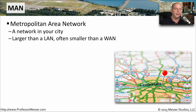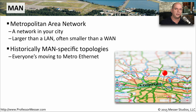A MAN sits somewhere between a LAN and a WAN. This is a metropolitan area network — usually in a central city or smaller geographical area that's relatively local to wherever you are. It is usually a local telecommunications provider giving you this MAN connectivity. These days, they're usually providing simply an Ethernet connection, connecting up all of your local MAN sites. Behind the scenes, they probably have a much higher speed fiber backbone running throughout the city.